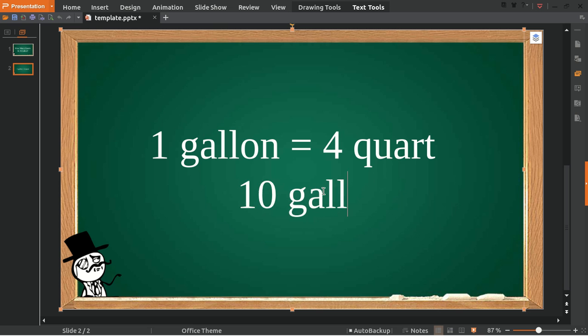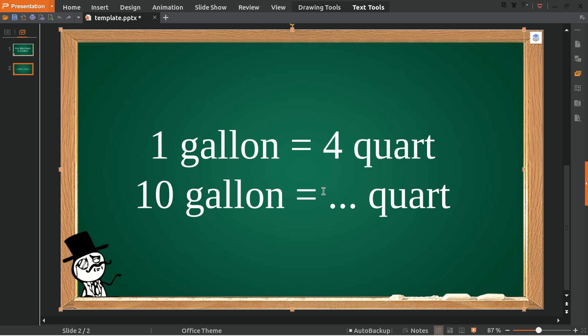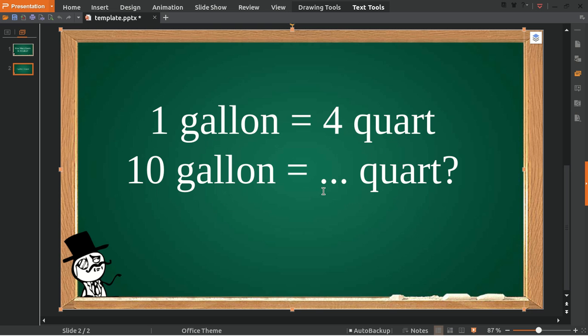So how many quarts do we get for 10 gallons? Okay, all right. To answer this question, first we need to write 10 multiplied with what—10 gallons is equal to 10 multiply with 1 gallon.